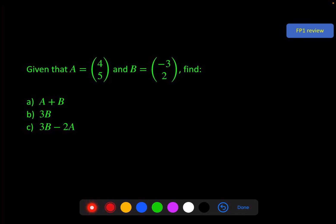Here we have a plus b, 4, 5, plus minus 3, 2. And we just add the top elements together, and the bottom elements together. To give 1, 7.